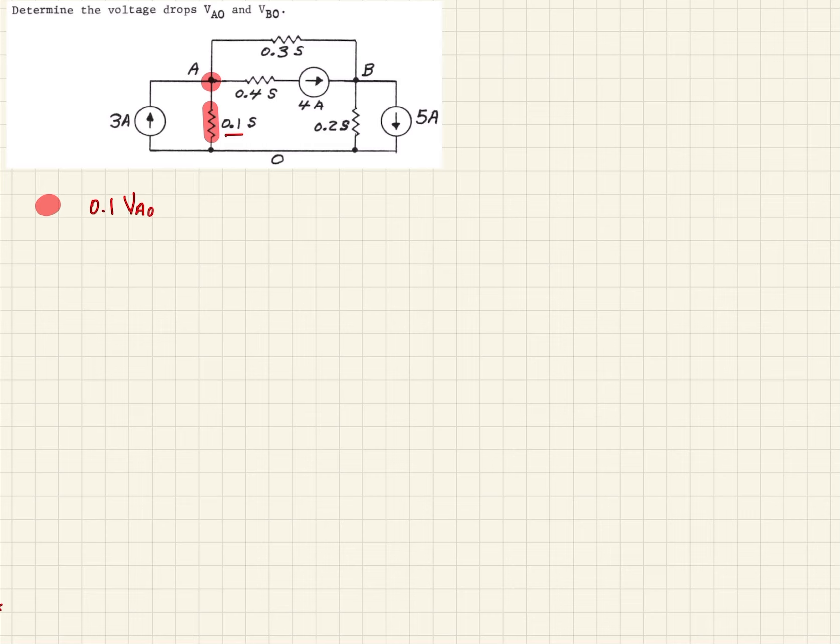As we move around to the different loads here, next we'll look at this branch. We have a current source, and we're defining current leaving the node as positive. So this is 3 amps that's entering the node, so therefore we need to show this as negative. So that'll just be minus 3.